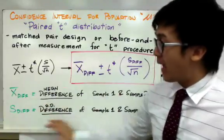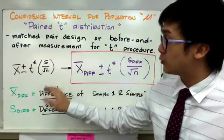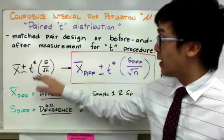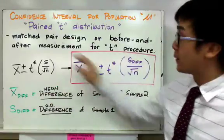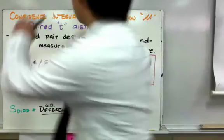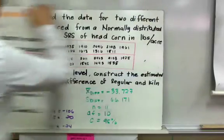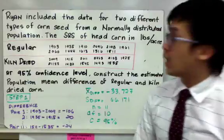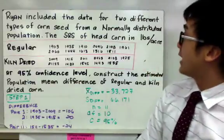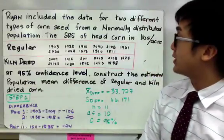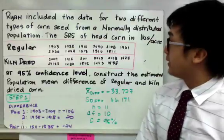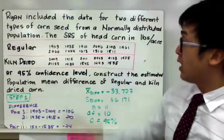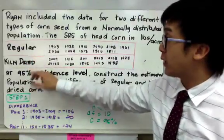Now this might be a little abstract for you right now, but as soon as you get the example, you will see the idea or the reasoning behind this formula or the paired T distribution. Now in this word problem, Ryan included the data for two different types of corn seed from a normally distributed population. The simple random sample of head corn in pounds per acre are recorded as follows. So we have the regular corn and we have the kiln dried corn for our data set.